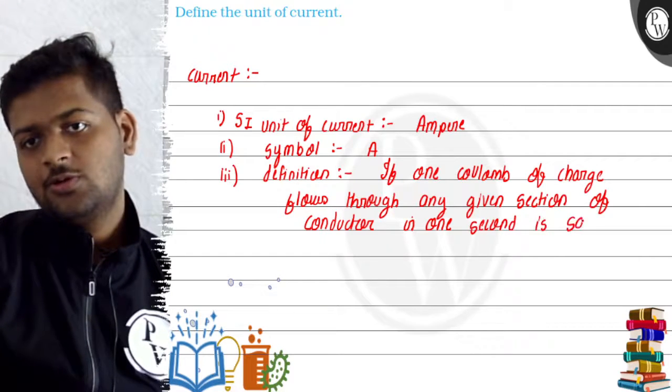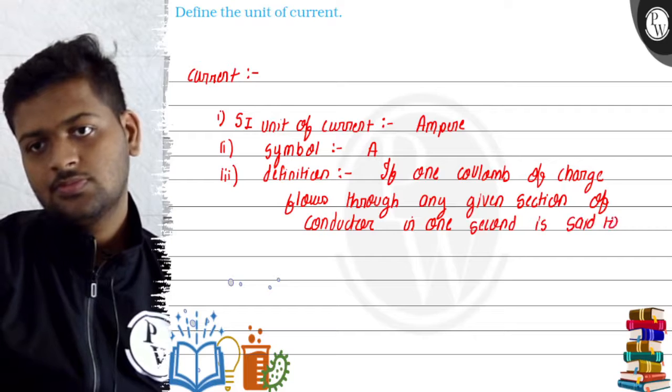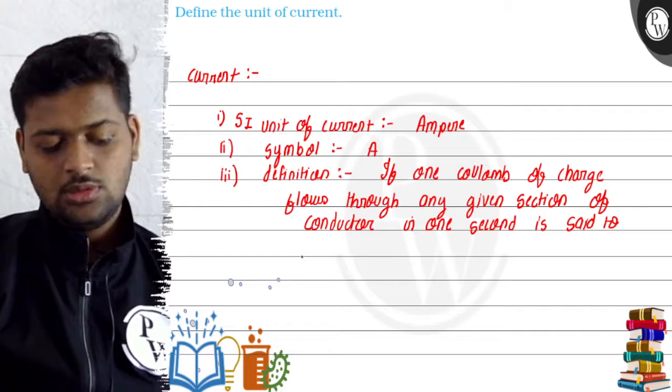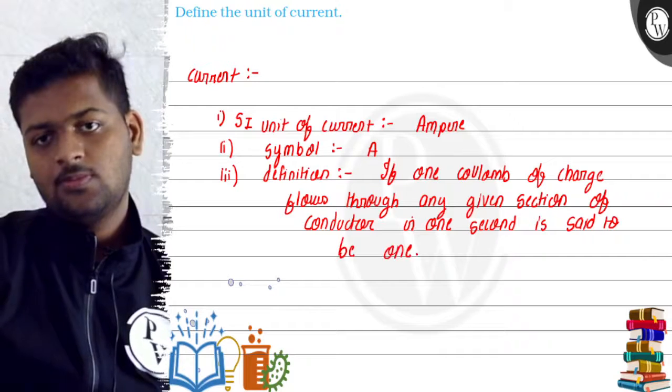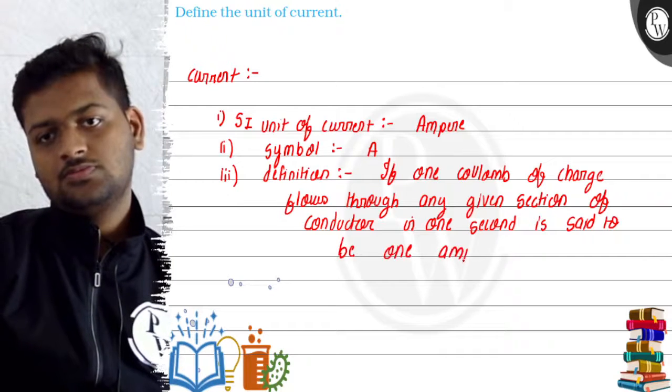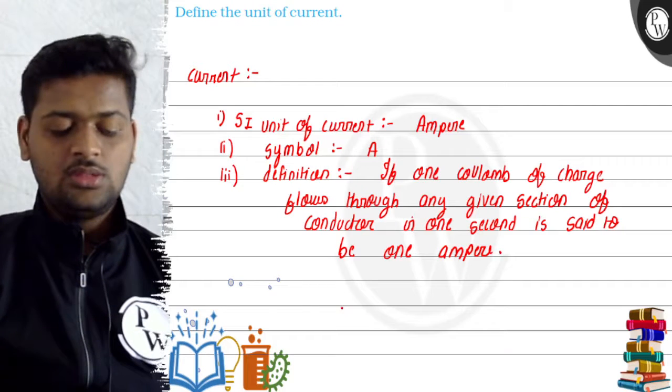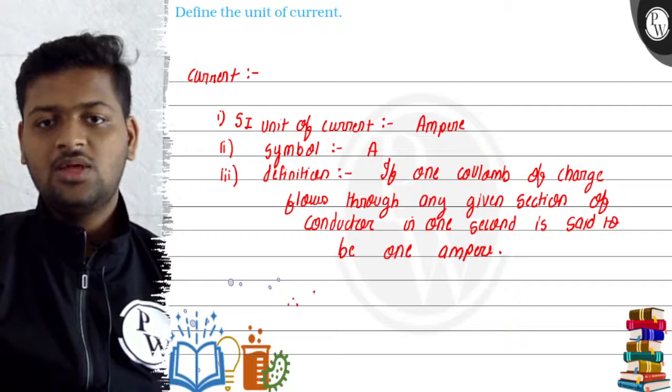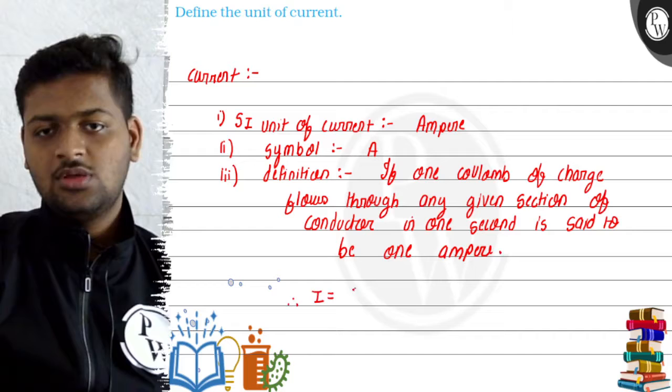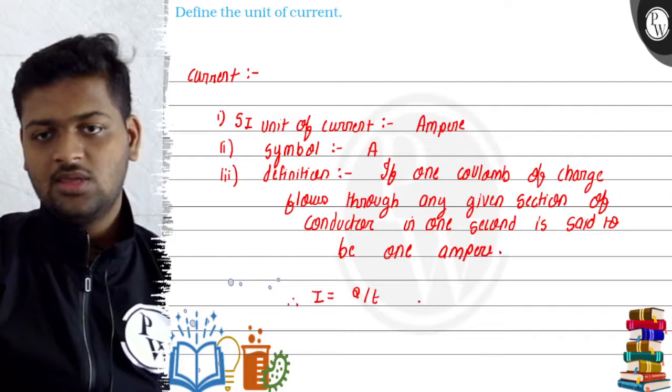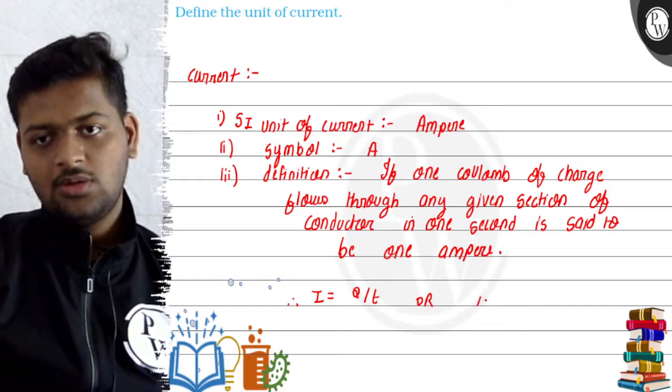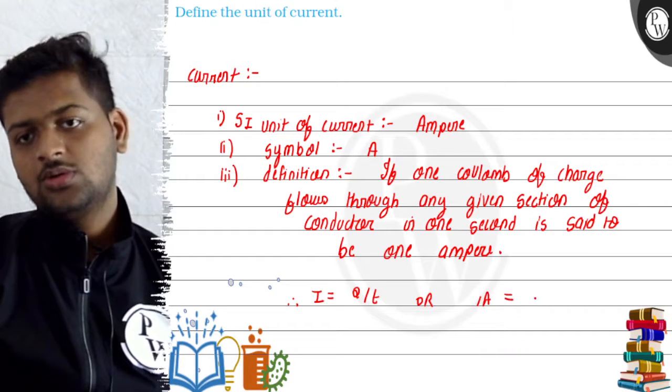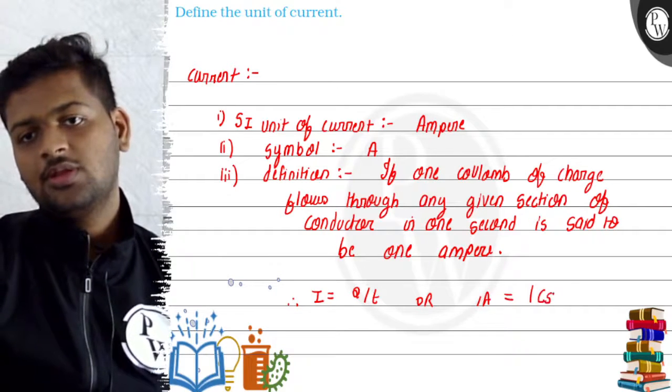Is said to be one ampere. Now we know this basic formula - this definition came from this: I = Q/t, or one ampere is equal to one coulomb per second.